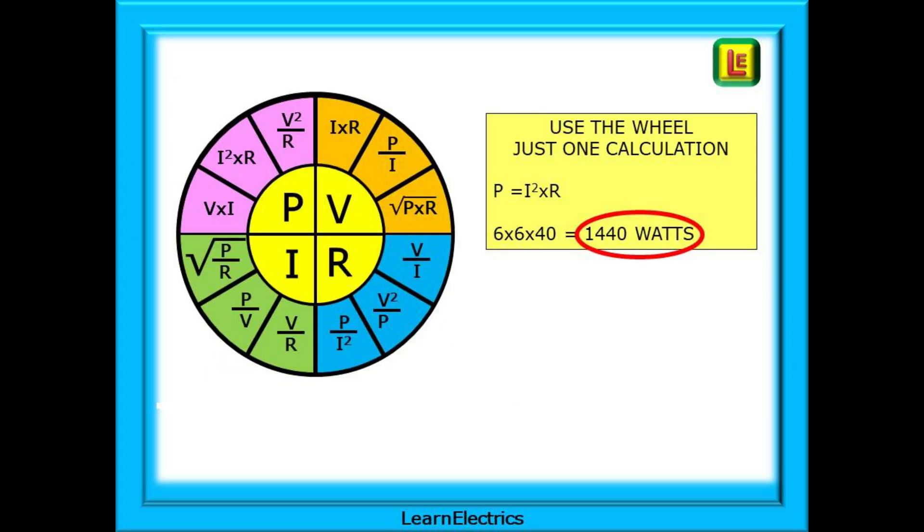Using the wheel, we can do this in one calculation. We know the current, I, is 6 amps, and the resistance, R, is 40 ohms, since this was given information. The wheel tells us that the power can be found by squaring the current and multiplying by the resistance, in other words, I squared times R. If we do this, we have an answer of 1440 watts.